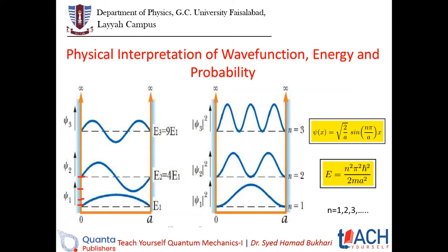For E4, we calculate four squared which is sixteen, so E4 is sixteen times E1. That is the value for the fourth energy level.